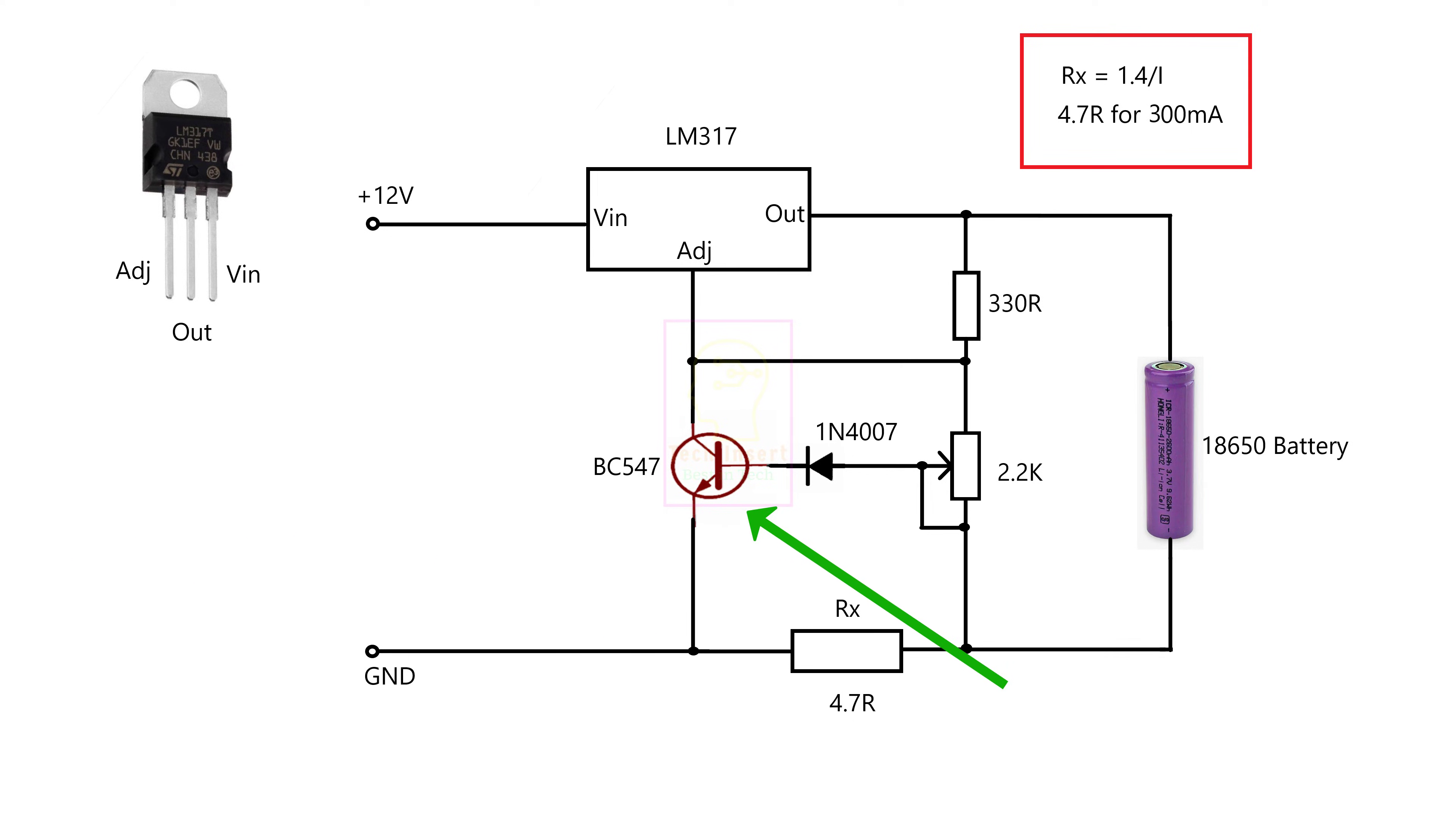BC547 is actually controlling the current to the battery. You can see RX, which will control the BC547. You have to keep one thing in mind that transistor is a current controlled device. That means the base current determines the collector current.